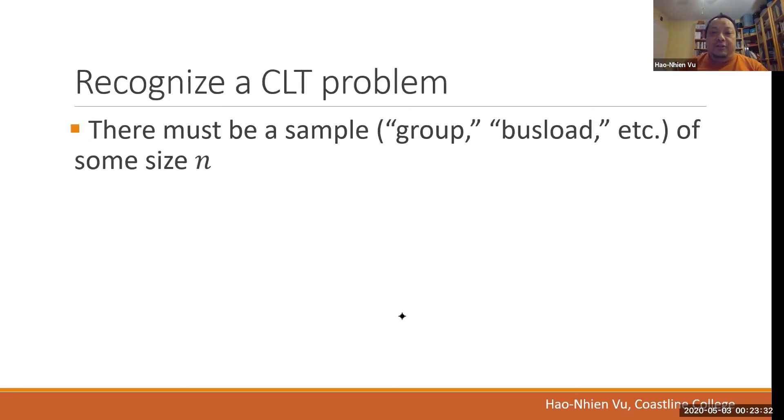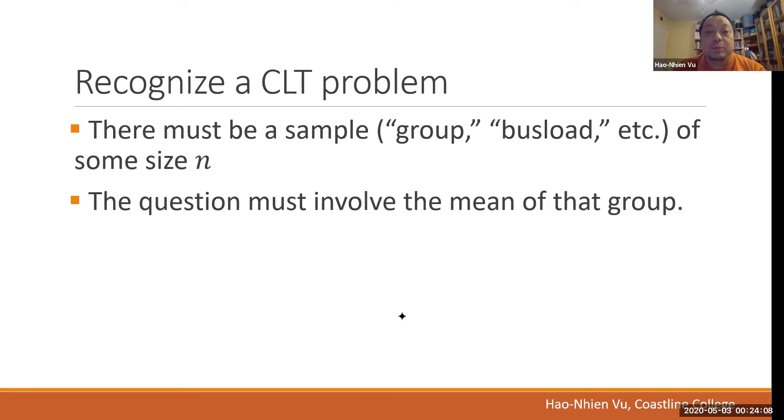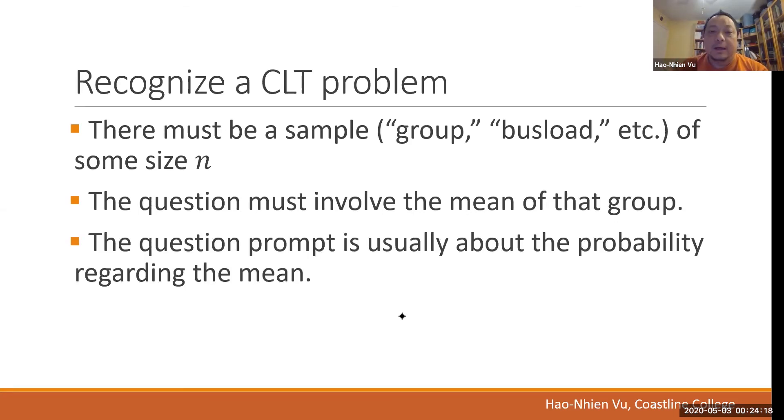So this is how you recognize a CLT problem. First, there has to be a sample of some size n. Now be careful that the word sample may not appear in the problem though. It may say a group, it may say a busload, or a team of high school competitors. And since CLT is about sampling distribution of the sample mean, the question must involve the mean of that group or sample. And finally, the question prompt is about the probability regarding that mean. So that's how you recognize a CLT problem.